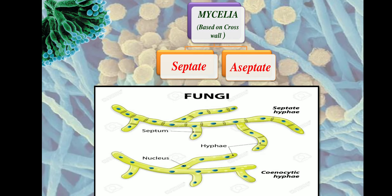These multinucleated hyphae without cross walls are also called cenocytic hyphae. The aseptate multinucleate mycelium is called cenocytic mycelium.